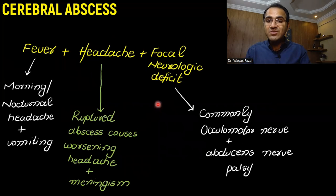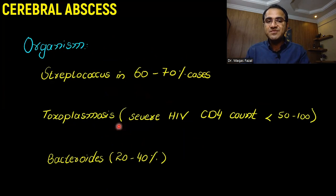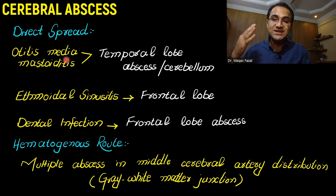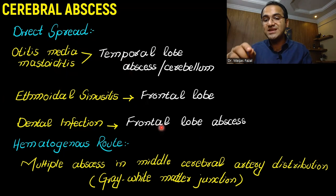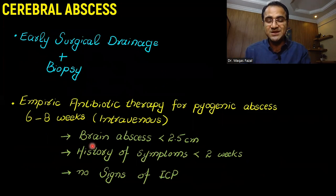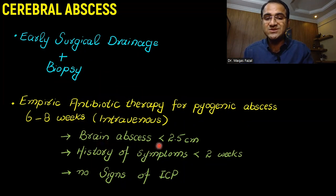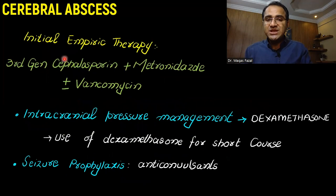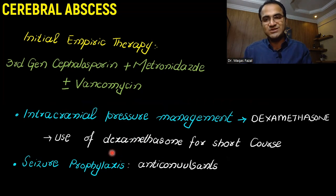In summary, we talked about the presentation of cerebral abscess and the organisms causing it. We talked about the spread of bacteria to the brain through direct routes — otitis media, ethmoidal sinusitis, dental infections — and via blood, which is mainly around the middle cerebral artery region. We discussed MRI as the most accurate test showing peripheral ring enhancement and central necrotic area, with biopsy as the best confirmatory test. Early surgical drainage is the mainstay of treatment; empiric antibiotic therapy can be given if the abscess is small, symptoms are brief, and there are no signs of raised intracranial pressure. Initial empiric therapy, pressure management with short-course dexamethasone, and seizure prophylaxis with anticonvulsants complete the management approach.